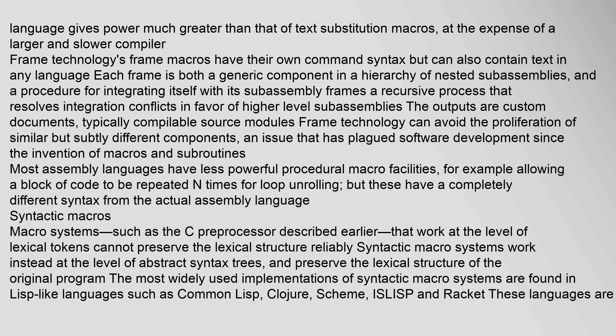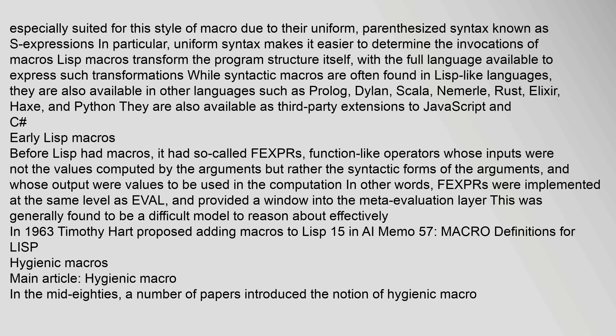Syntactic macro systems work instead at the level of abstract syntax trees and preserve the lexical structure of the original program. The most widely used implementations of syntactic macro systems are found in Lisp-like languages such as Common Lisp, Clojure, Scheme, ISLisp, and Racket. These languages are especially suited for this style of macro due to their uniform parenthesized syntax known as S-expressions, which makes it easier to determine the invocations of macros. Lisp macros transform the program structure itself, with the full language available to express such transformations. Syntactic macros are also available in other languages such as Prolog, Dylan, Scala, Nemerle, Rust, Elixir, Haxe, and Python, as well as third-party extensions to JavaScript and C#.